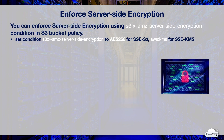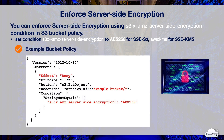You can enforce server-side encryption of all objects in an S3 bucket using the S3 x-amz-server-side-encryption condition in the bucket policy. In this example bucket policy, it uses the StringNotEquals condition to check the put object request header, whether it includes x-amz-server-side-encryption equal to AES256. It denies any put object requests not using the required header to set server-side encryption.